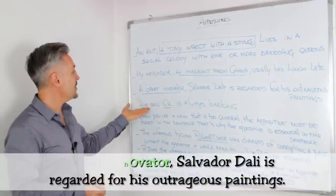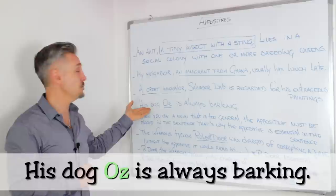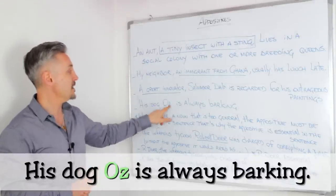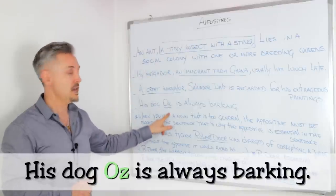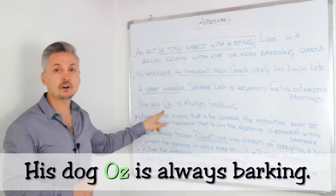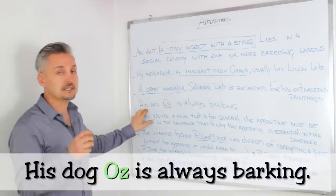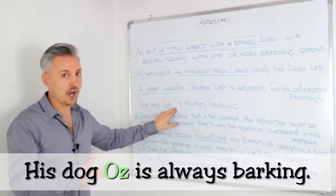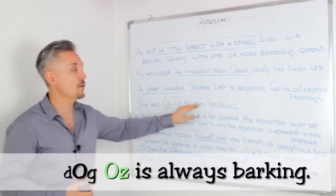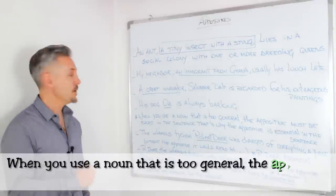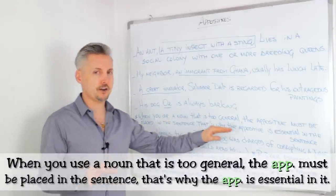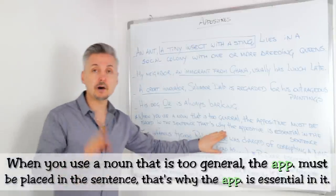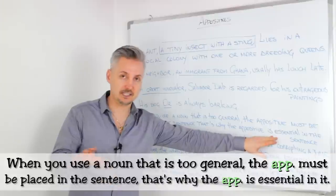Now, the other example from the beginning was 'His dog, Oz, is always barking.' Oz, here, is the appositive and is without commas, because I'm describing the dog specifically — his dog, Oz. No other dog. His dog, Oz, is always barking. Now, when you use a noun that is too general, the appositive must be placed in the sentence — that's why the appositive is essential in the sentence.